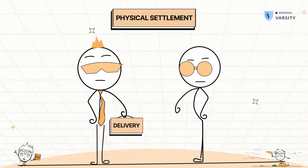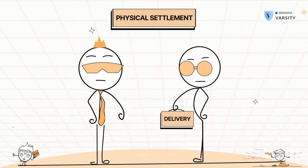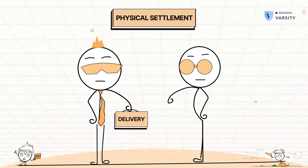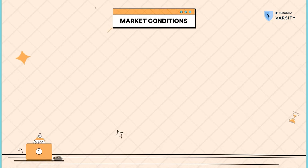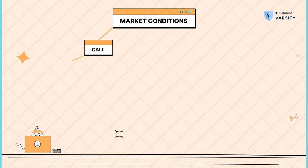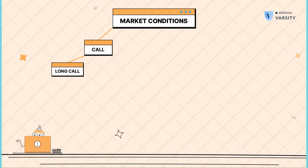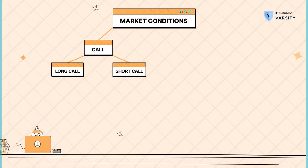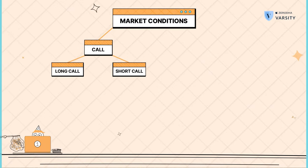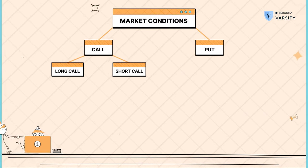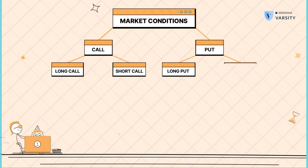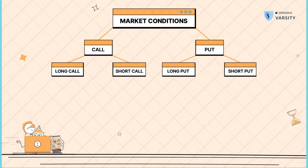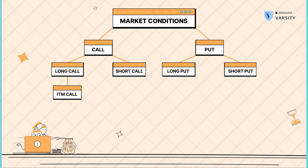Physical settlement implies that you either give delivery of stocks or take delivery of stocks, and this is purely dependent on the position that you have in the market. With options, there are only four kinds of positions that you can initiate. You can either be a long call option holder or a short call options holder. With respect to the put options, you can either be a long put holder or a short put holder. If you have a long in the money call option,